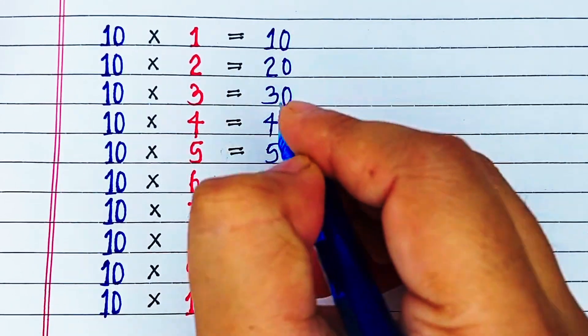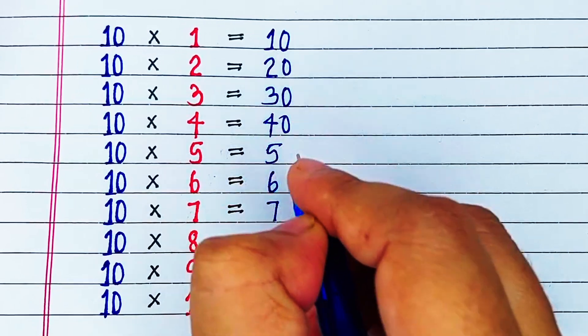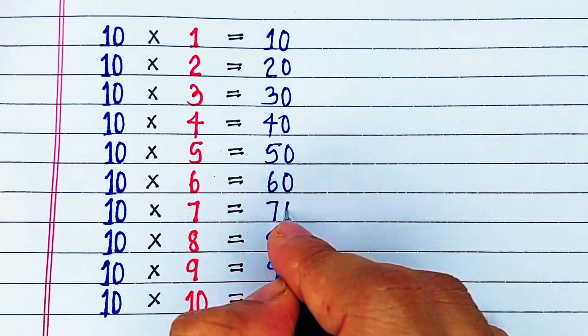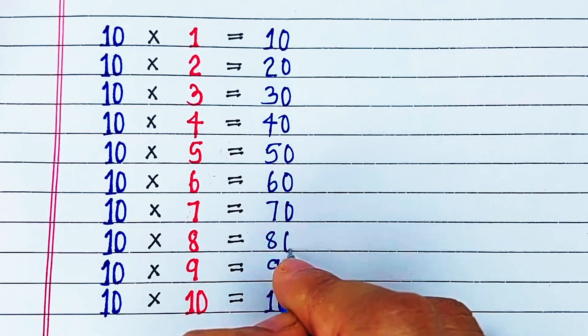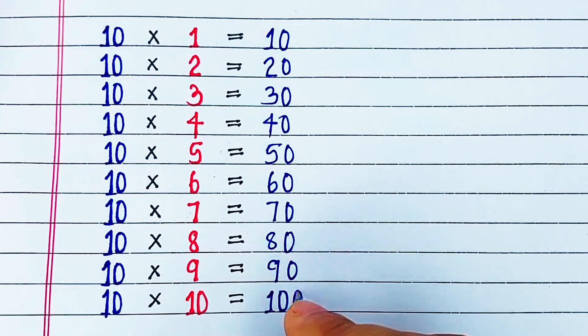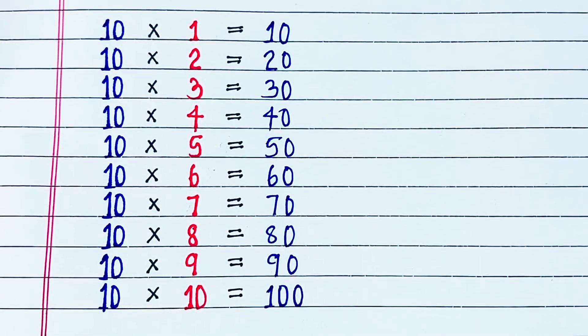10 1s are 10, 10 2s are 20, 10 3s are 30, 10 4s are 40, 10 5s are 50, 10 6s are 60, 10 7s are 70, 10 8s are 80, 10 9s are 90, 10 10s are 100.